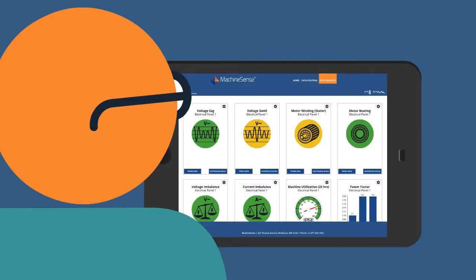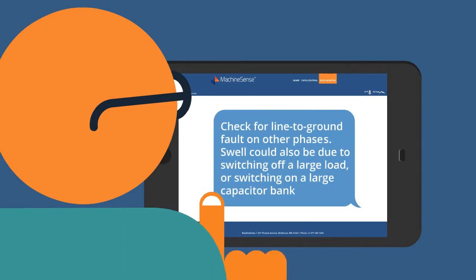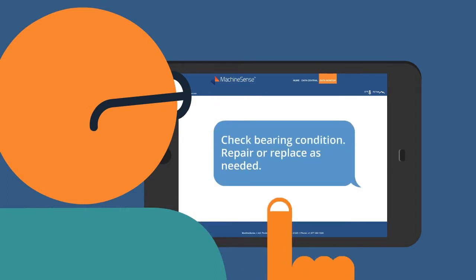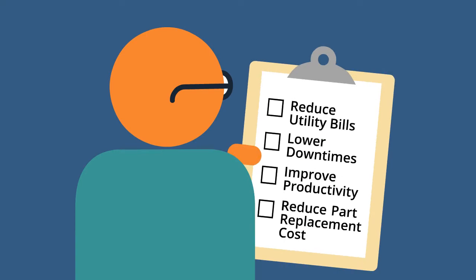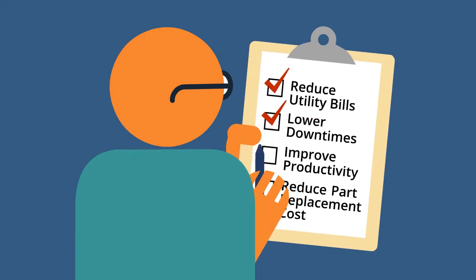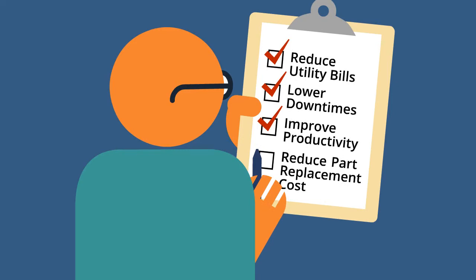Armed with this data, you can put together an action plan to tackle the biggest cost reduction opportunity and productivity enhancer in American industry today. You'll conquer poor power quality issues and achieve economic gains through reduced utility bills, lowered downtimes, and improved productivity.